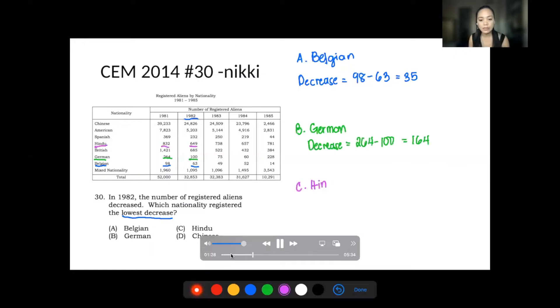Letter C is Hindu. The decrease is 832 minus 649, and that's 183.